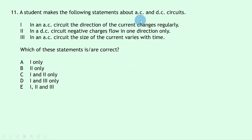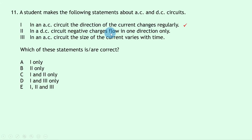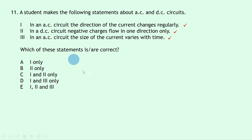Question 11: three statements about AC and DC circuits. Statement 1 — in an AC circuit the direction of current changes regularly: true, that's the definition of alternating current. Statement 2 — in a DC circuit negative charges flow in one direction only: true, electrons flow one way and electrons are negatively charged. Statement 3 — in an AC circuit the size of current varies with time: true, both magnitude and direction change. All three statements are correct — answer E.